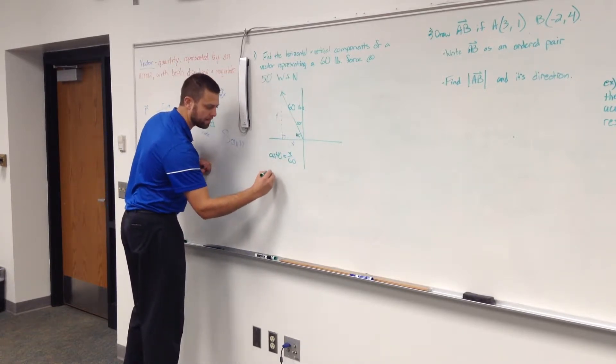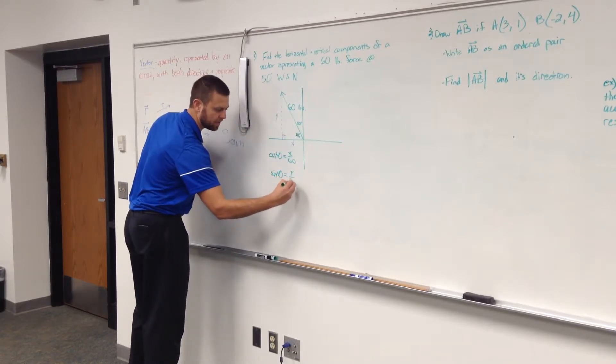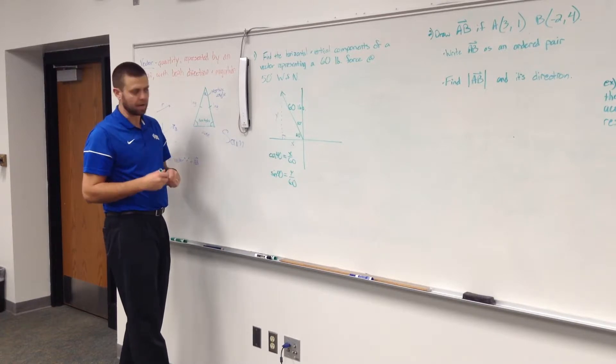What's my setup for y? Sine of 40 equals y over 60, multiply both sides by 60.